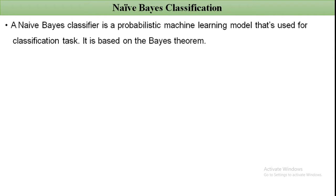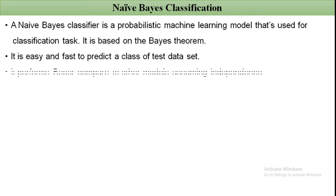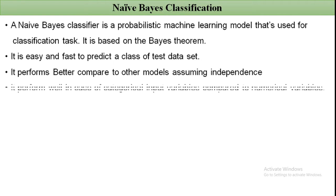A Naive Bayes classifier is a probabilistic machine learning model used for classification tasks. It is based on Bayes' theorem. It is easy and fast to predict the class of a test dataset. It performs better compared to other models assuming independence, and performs well with categorical input variables compared to numerical variables.